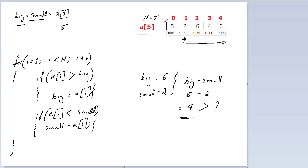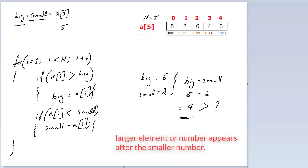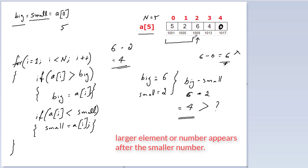This is the first part of the problem statement, not yet considering the second part. The second part clearly states the larger element appears after the smaller element. The larger element here is 6, so the smaller element should appear before it, in the range 0 to 1. Even if a[4] has 0, which is the smallest element, we won't consider it. So 6 minus 2 equals 4, not 6 minus 0.